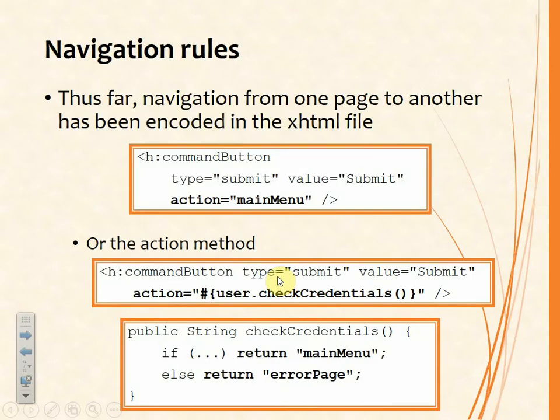Moving on to navigation rules. Thus far we have hard-coded our navigation. For example, in the facelet we might have a command button where the action is set equal to the next view name. The extension .xhtml will automatically be appended to main menu and that will become the next page that is rendered, the next view.